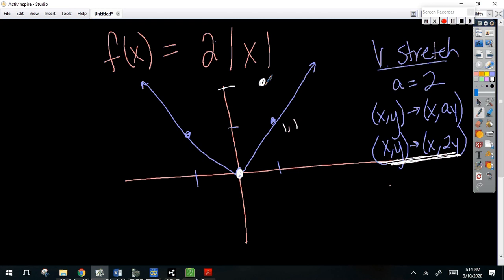All right, what does negative 1, 1 become? Negative 1, 1 becomes, negative 1 stays the same, double that Y. Does that look like a vertical stretch? Yes, because it is. Let's do another one.